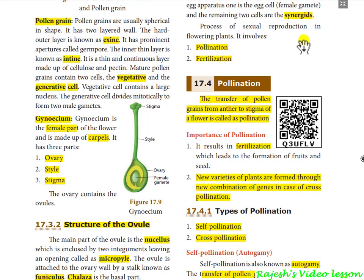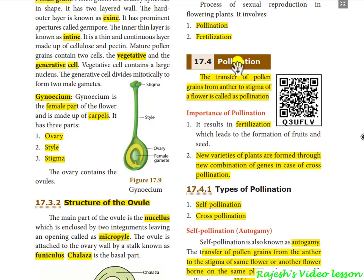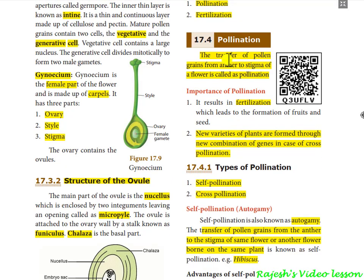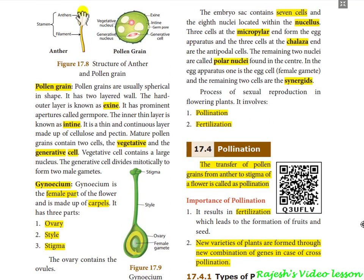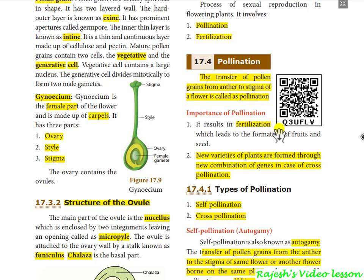Sexual reproduction takes place in two phases: pollination and fertilization. First, we go through pollination. Pollination is nothing but the transfer of pollen grains from the anther to the stigma. When pollen is liberated from the anther and sticks on the stigma, it is called pollination. This pollination takes place in two types.